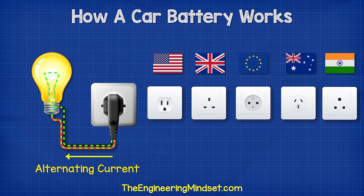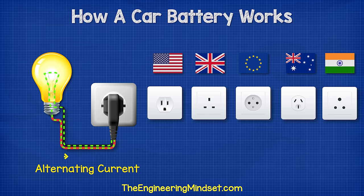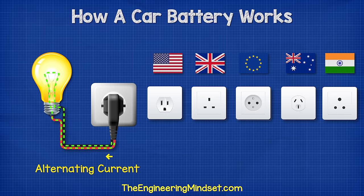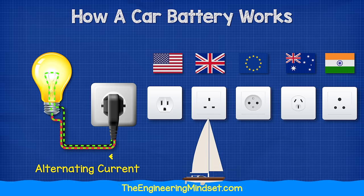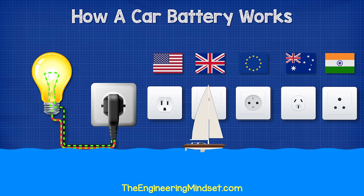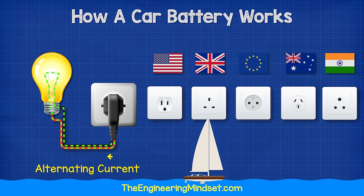The other type of electricity is AC, or alternating current, which is what you get from the power outlets in your homes. In this type the electrons are pushed and pulled forwards and backwards. Think of this like the tide of the sea flowing in and out between its maximum high tide and its maximum low tide.